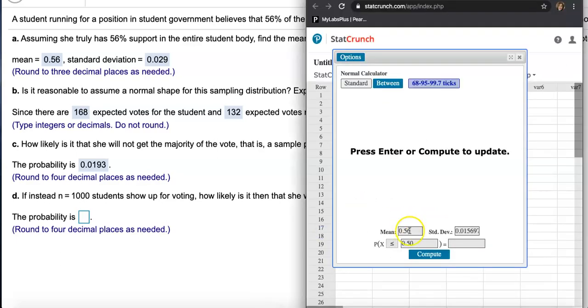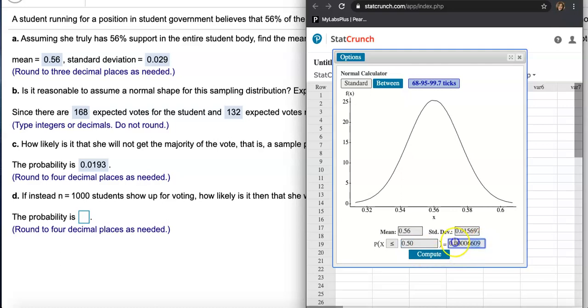And now what did they want? Same type: if instead n is 1,000 students show up for voting, how likely is it then that she will not win the majority? Again, winning the majority means getting more than 50% of the vote, but not winning the majority will be getting less than 50%. So compute the same exact scenario.